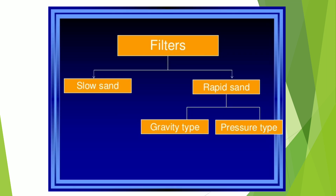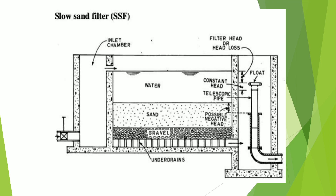In filtration, filters are generally of two types: slow sand filters and rapid sand filters. Rapid sand filters are further divided into gravity type and pressure type. We will begin with slow sand filters.